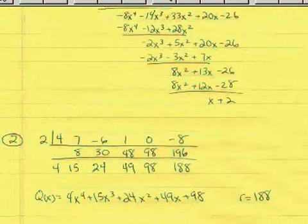So we put the coefficients, we had 4x to the 5th, 7x to the 4th minus 6x to the 3rd plus x squared, 0x, we've got to put in the placeholder, minus 8. Drop the 4.